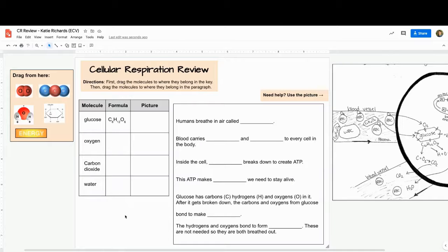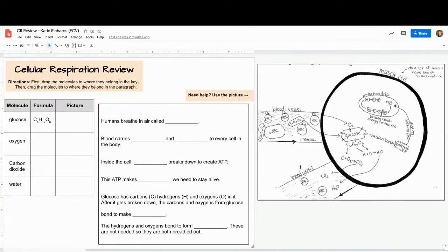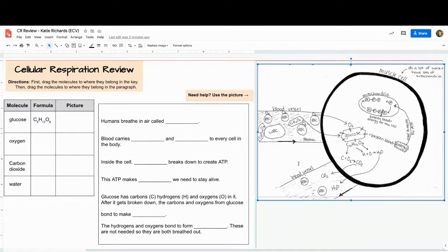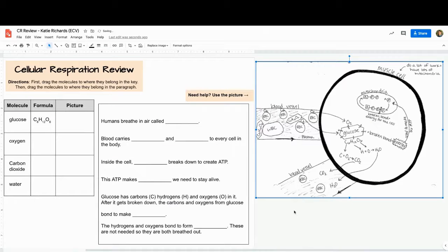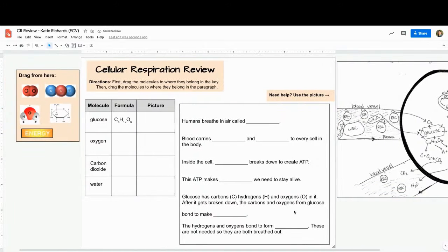In this review activity, the teacher has given her students a bank of objects to drag. She's given them a key for all these different items and also a closed paragraph as well as a visual support that she used during instruction that students can refer to as they work on this and review their concepts.